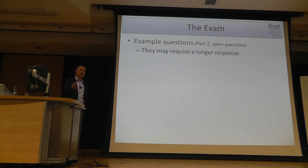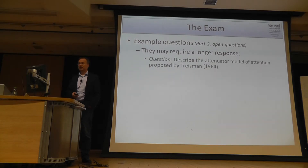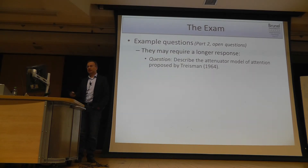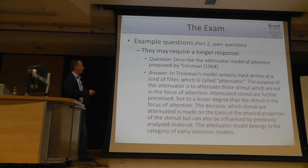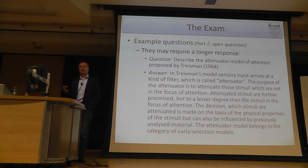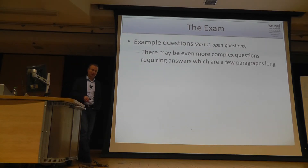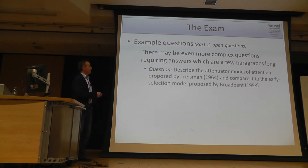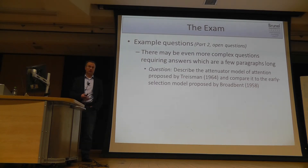Finally, you may have questions which require a longer response — something like: describe the attenuator model of attention proposed by Treisman, and discuss that in a little bit of detail. I won't go through that answer — you have that on the slides and in the marking criteria. There may be even more complex questions, like: describe the attenuator model of attention and compare it to the early selection model proposed by Broadbent, or discuss evidence in favor of it and against it.